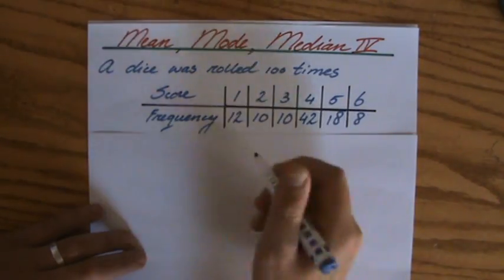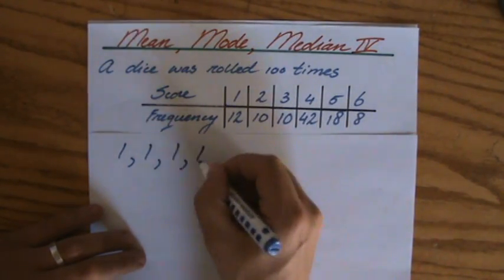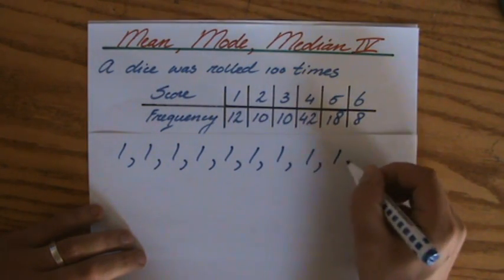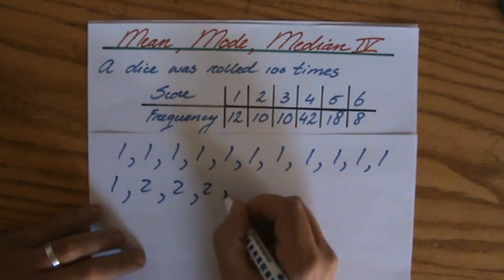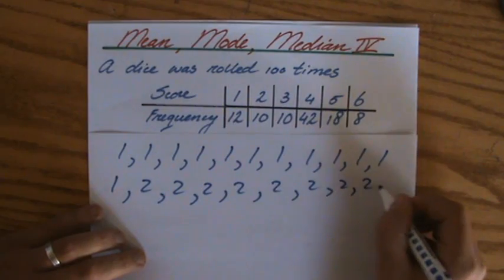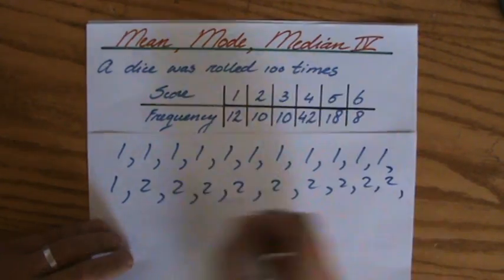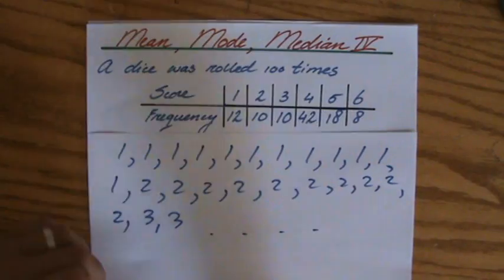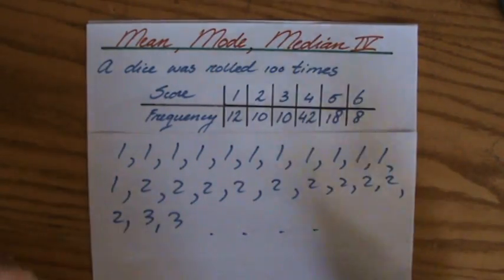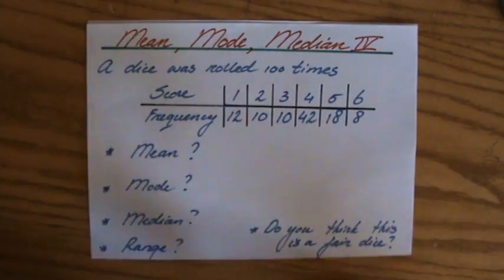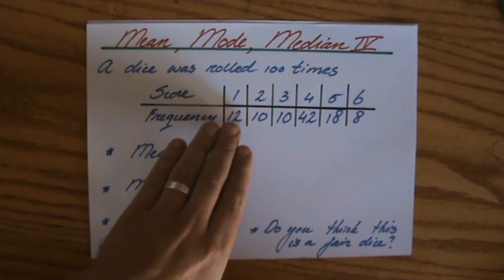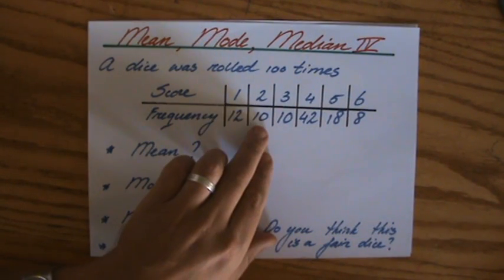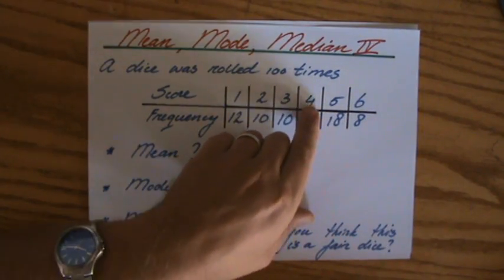What does the frequency actually mean? This table means I have 1, 2, 3... up to 12 ones, then I have 2s: 2, 3, 4... up to 10 twos, then I have 3s, and so on. Rather than having a hundred individual pieces of information, they organize it for you in a frequency table. But you have to realize that these are 12 pieces of information, these are 10 pieces of information, and these are 42 pieces of information.